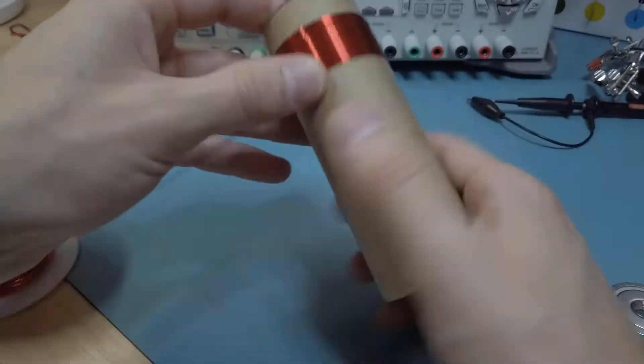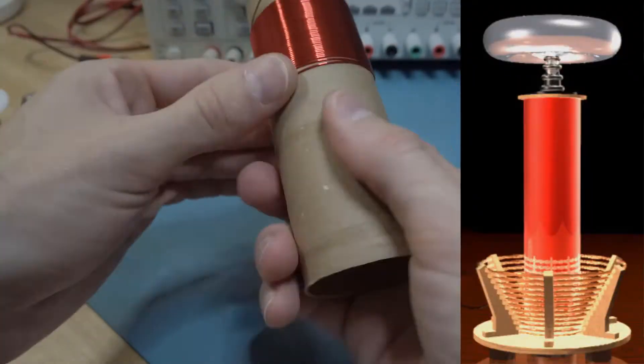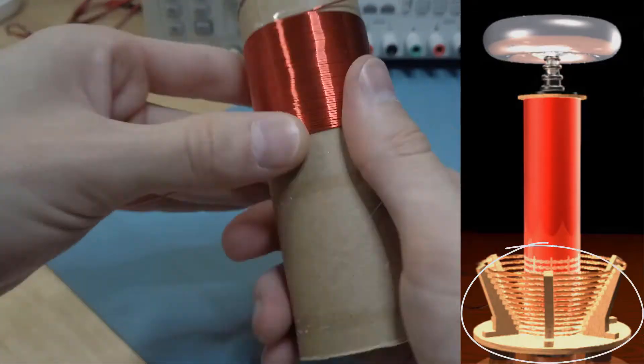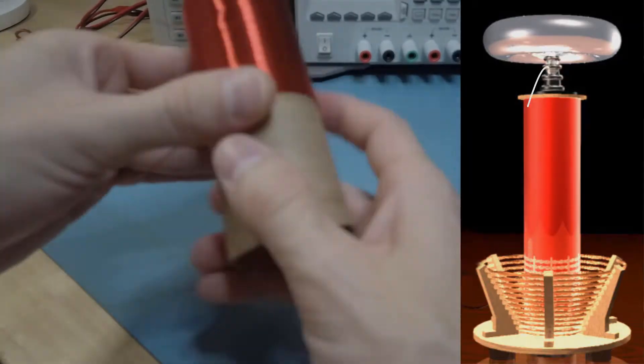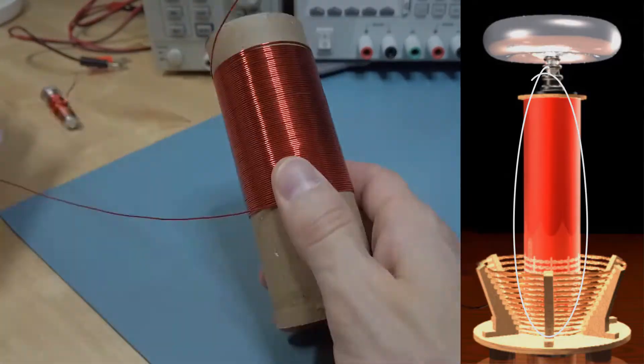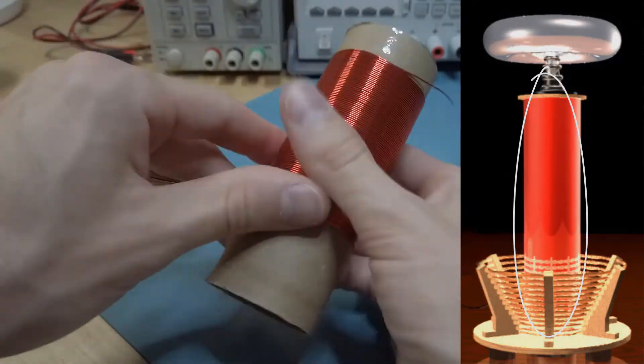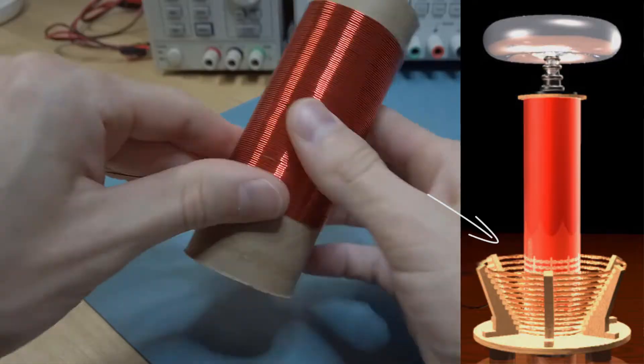A permanent magnet will then be used to induce an electromotive force in the coil. Faraday's law states that a changing magnetic field will cause a voltage to be induced into a coil. In the case of the Tesla coil, a changing current in the primary coil creates a magnetic field around the primary, this in turn induces a voltage in the secondary coil.